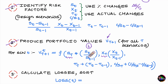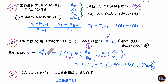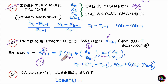Once you have the bumped or shocked values of your risk factors, pass these bumped values into your valuation model. What comes out is the value of your portfolio as of the close of day T+1 for that particular scenario. Repeating this for all scenarios from day 1 to day capital T gives you these many simulated values for your portfolio.